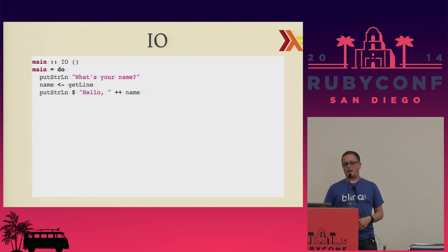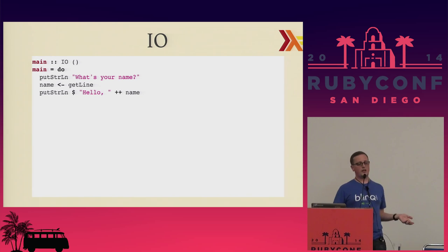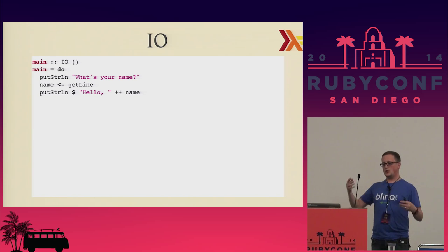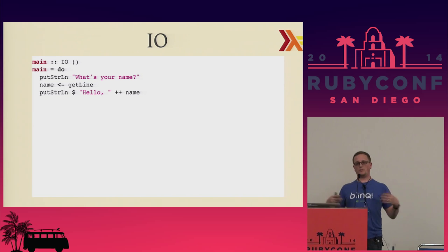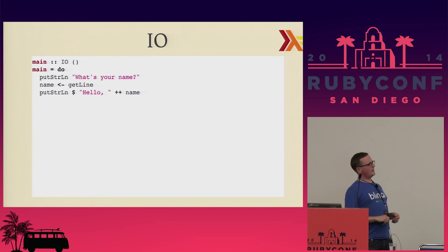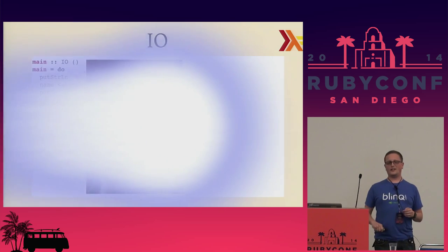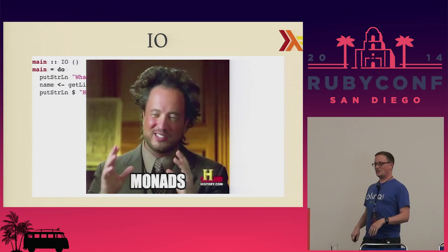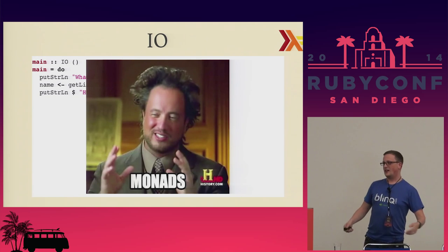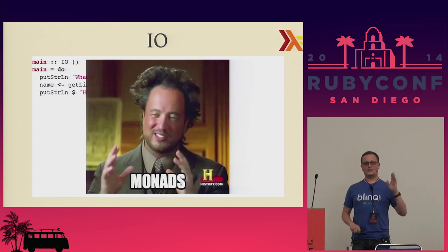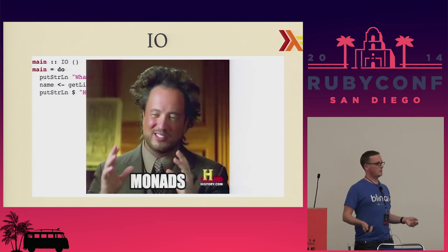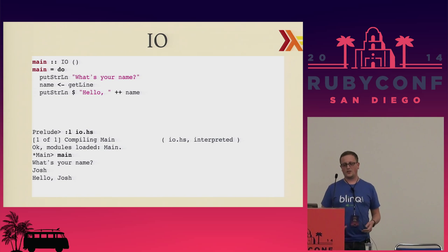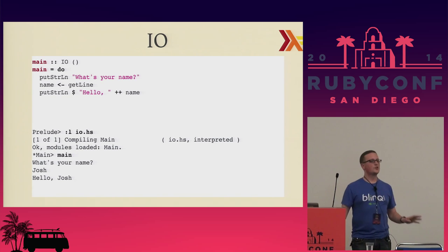One more thing with Haskell: IO. IO is pretty straightforward. You define a function main that returns IO over the null concept. For main, I'm going to print a string, get the name out of standard in, and put that back out. What is this IO thing? I am not going to cover monads - but you don't really have to understand monads to read the rest of this. They're there. I highly recommend Tom Stewart's talk about monads on the internet - really great from a Ruby perspective. Basically: if you run the main function, it asks your name, you type in Josh, and it says hello, Josh. That's all you really need to know for now.